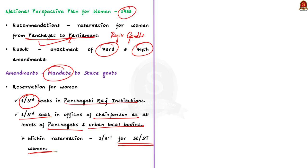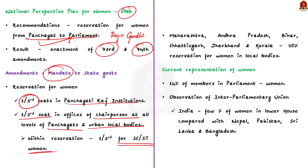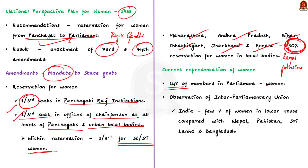Many states have taken historic steps beyond the mandatory one-third provision. States such as Maharashtra, Andhra Pradesh, Bihar, Chhattisgarh, Jharkhand, and even Kerala have made legal provisions to ensure 50% reservation for women in local bodies. If we look at the current representation of women in parliament, only about 14% of members in the Indian parliament are women — the highest percentage so far. But according to the Inter-Parliamentary Union, India has fewer women in the lower house when compared to neighbouring countries such as Nepal, Pakistan, Sri Lanka, and Bangladesh. This is why the women's reservation bill becomes relevant.